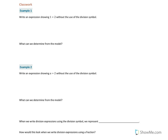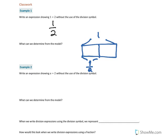On to our first example: write an expression for 1 divided by 2 without the use of the division symbol. We can take our bar and draw it again, making that our 1, and then divide it by 2. We know this becomes 1 half. So if we write an expression showing 1 divided by 2, we would write 1 half.